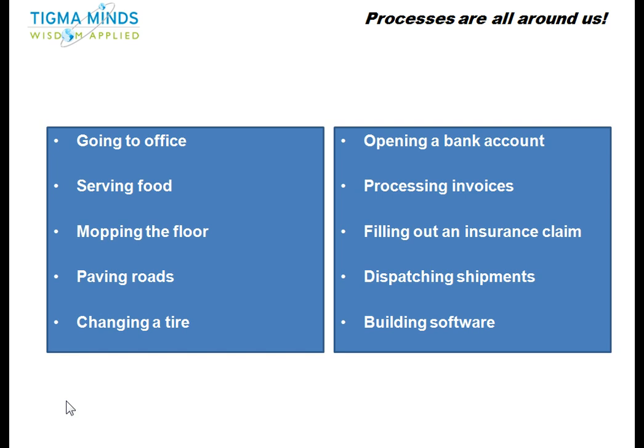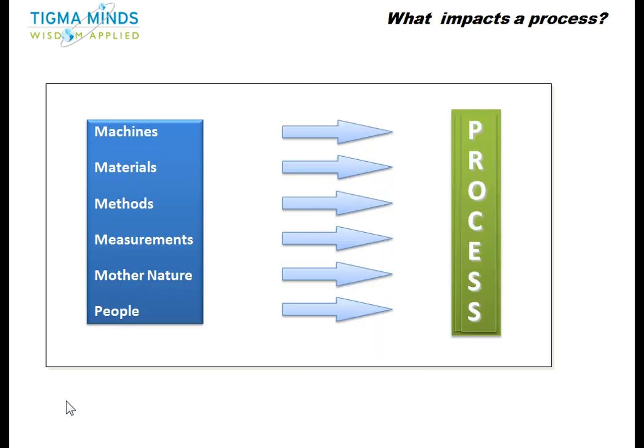Okay, let's go on to the next slide now. So these are the categories of inputs that influence a process. And what I mean by that is if a process is influenced, so the output of a process has also to be influenced by the same categories.